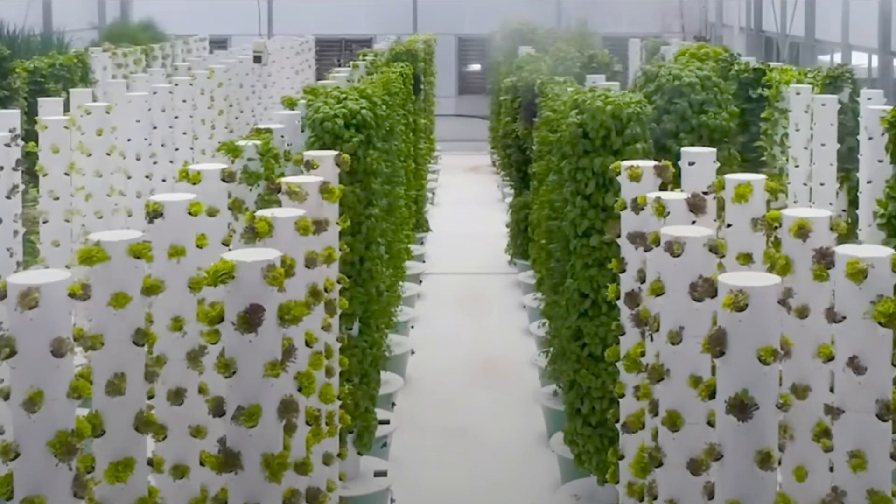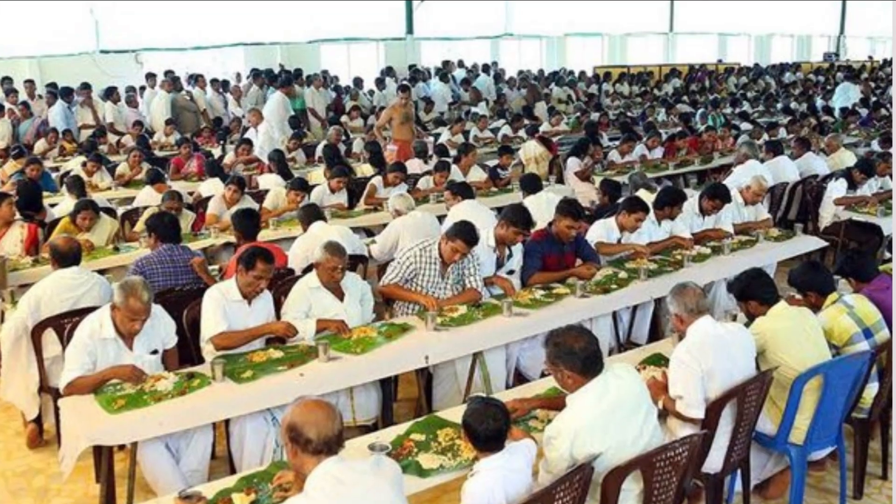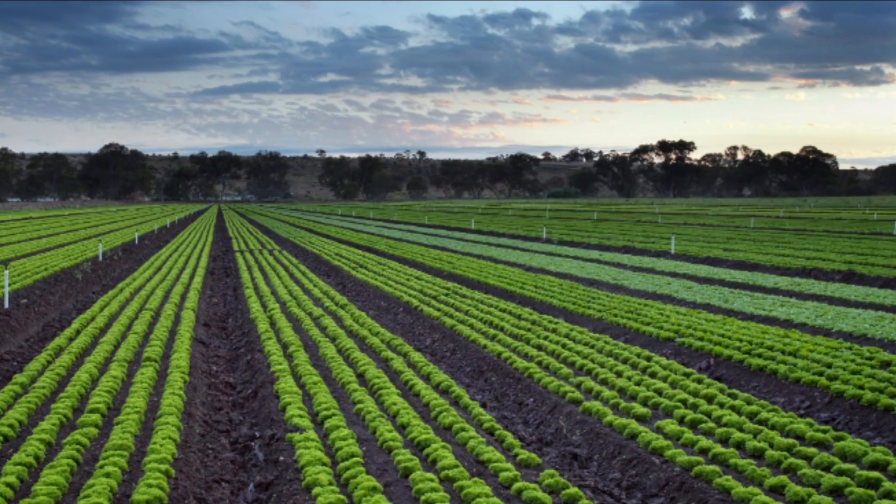In half an acre, we have seeds for one family every day. We have seeds for 20 to 150 acres. This is vertical farming.